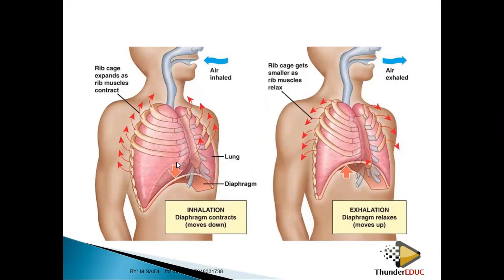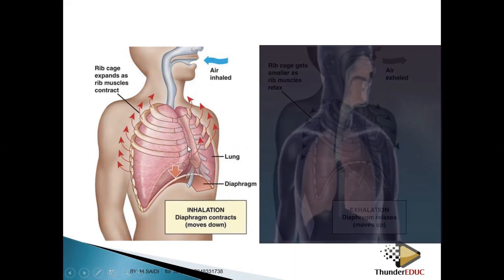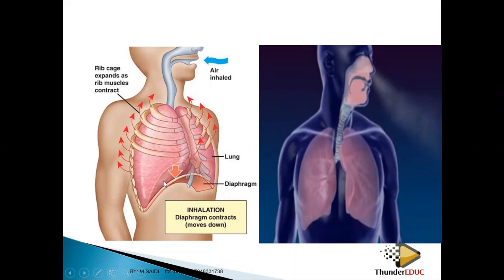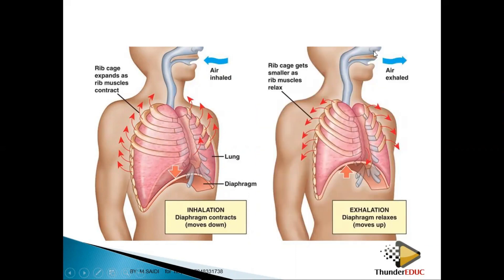When the diaphragm moves down, the space inside the lungs becomes greater, meaning the volume is large and the pressure is low. The atmospheric pressure is then higher than the pressure inside the lungs, so air is dragged into the lungs.